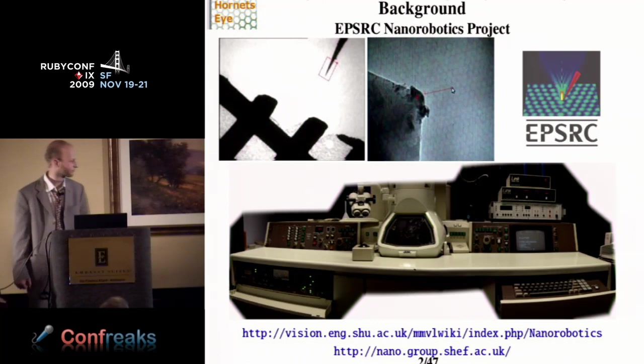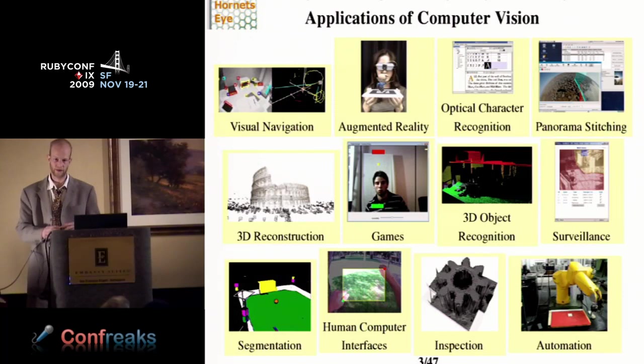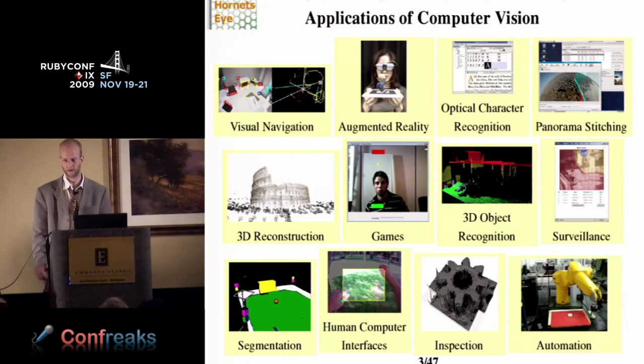While I did this work in context of the nanorobotics project, the intention is to write a general purpose machine vision library. Here are a few example applications of computer vision. I don't have time to go into the details. But what I want to show today is a bit of augmented reality, because many people get stuck on doing two dimensional computer vision. Once you have taken this step, you can do so much more. It's very interesting.